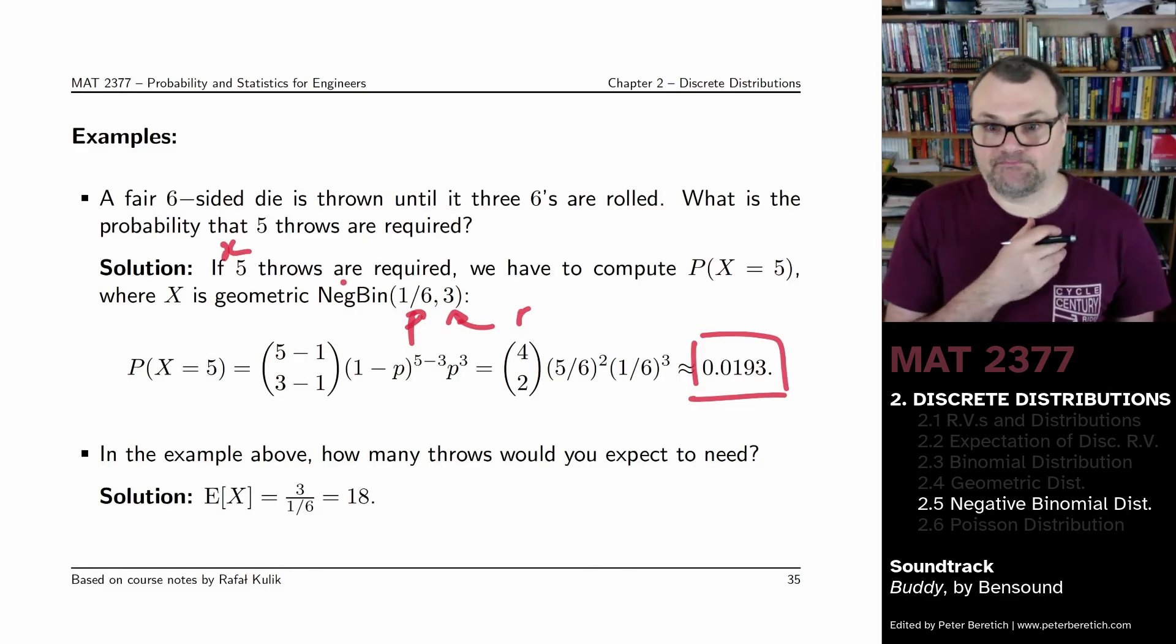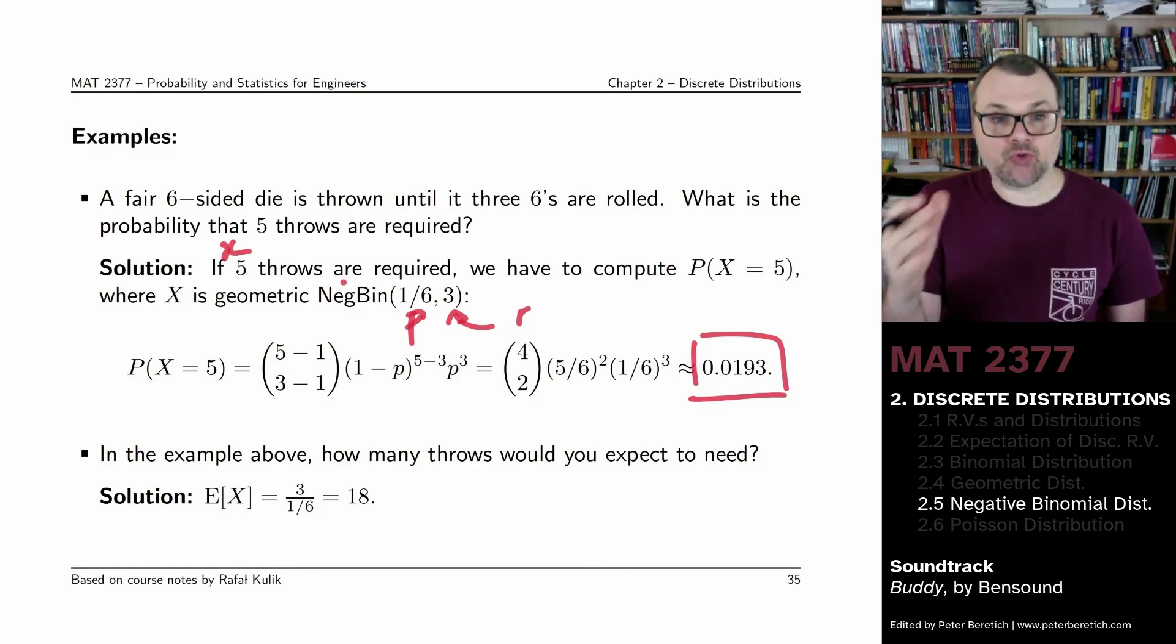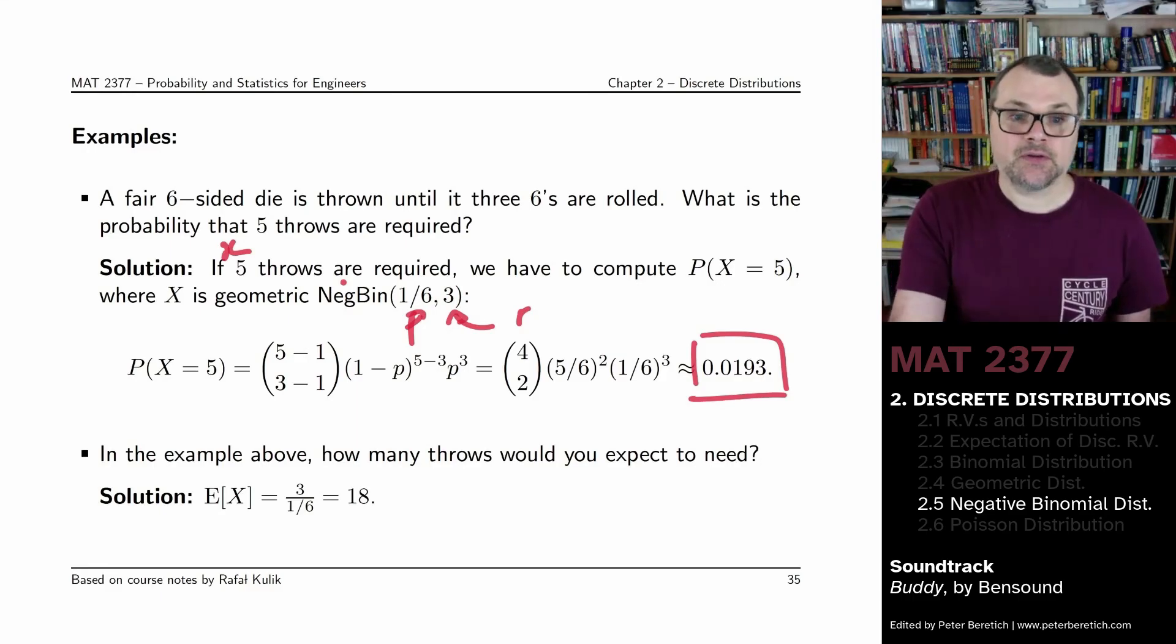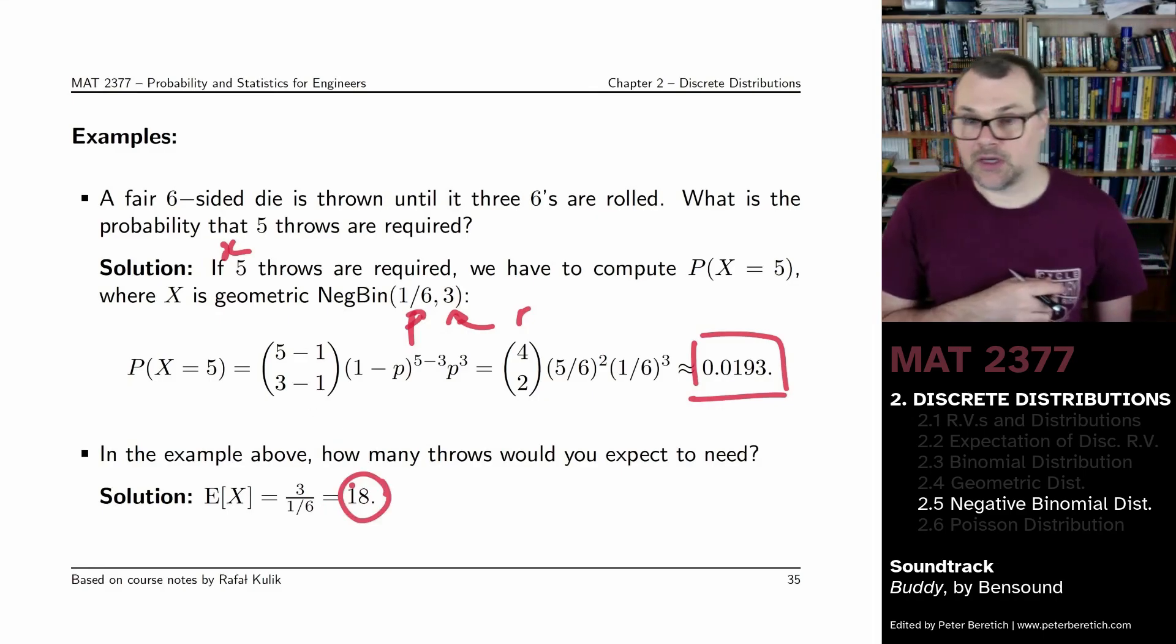In that example, how many throws would you expect to need in order to roll three sixes? Well, it would be R divided by the probability of success, 3 divided by 1 over 6 is 18. It makes sense.